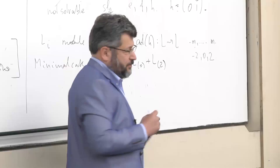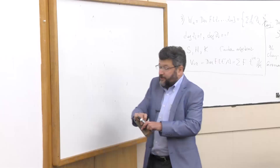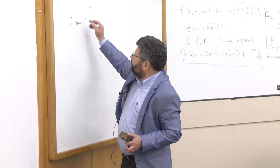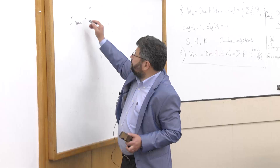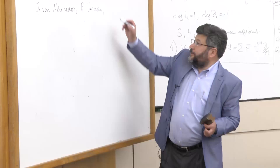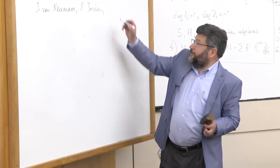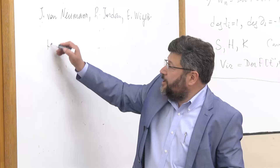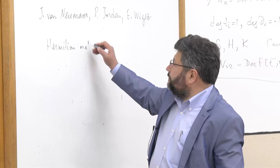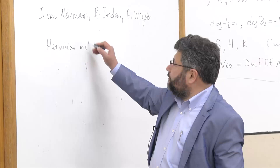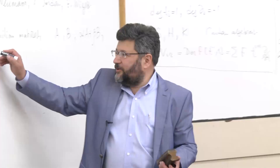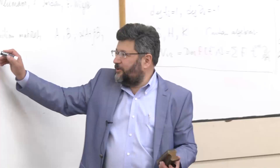I have to start a different story that goes back to the mid-1930s. In the mid-1930s, three distinguished authors — John von Neumann, Pascual Jordan, and Eugene Wigner — decided to generalize the formalism of quantum mechanics. The usual observables in quantum mechanics are Hermitian matrices or Hermitian operators in Hilbert space. If A and B are Hermitian matrices, their linear combination with real coefficients is again Hermitian, but their product does not need to be.